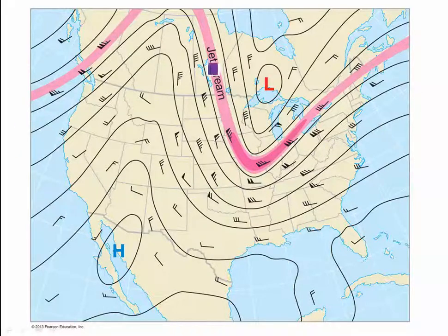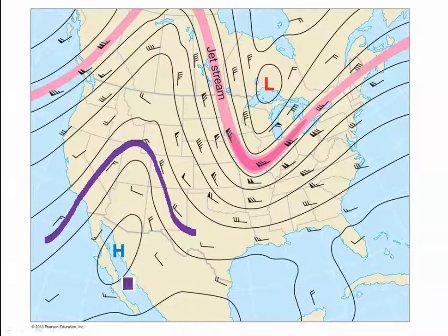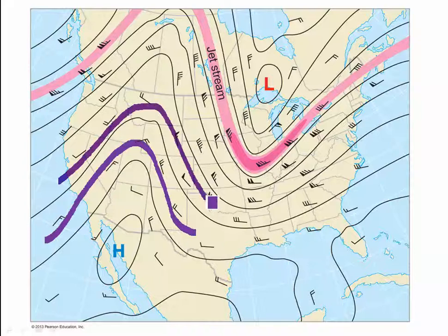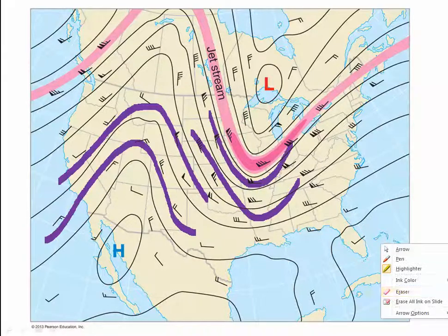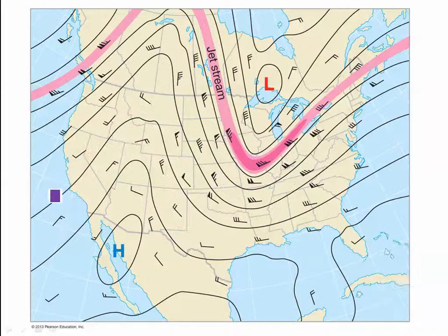In answering the questions we're going to look at, we're going to assume that this flow pattern is persisting for much of the spring and early summer. What we have is a stagnant ridge — a high pressure upper air system — over the western U.S., and then a stagnant trough over the eastern U.S. What do we know about the position of these upper air flow patterns relative to our surface systems?